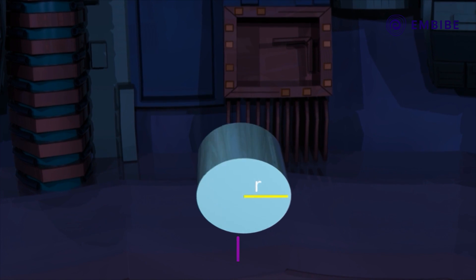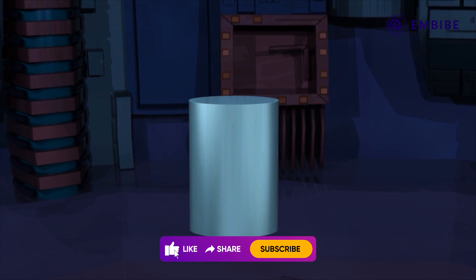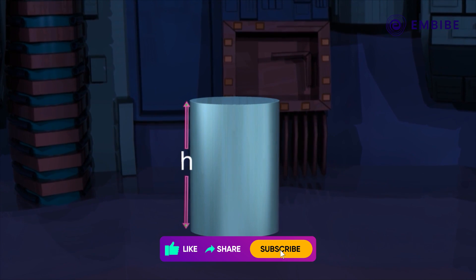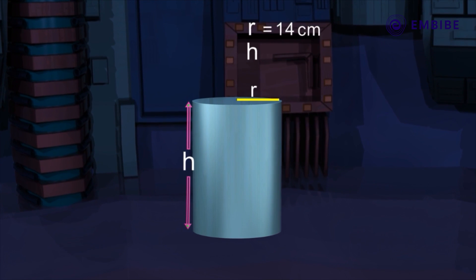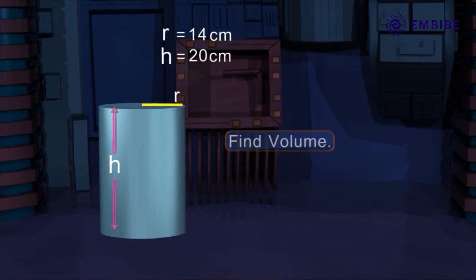The radius of the base and the height of a cylinder are 14 centimeters and 20 centimeters respectively. Find its volume.